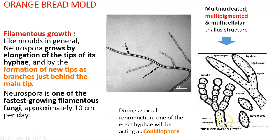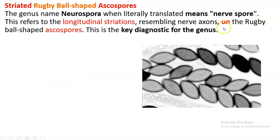During asexual reproduction, there will be an erect hyphae called conidiophore formation. This is the multicellular, multinucleated, and multi-pigmented thallus. You have to know why it is called Neurospora — it literally means 'nerve spore.' Nerve means it is like having longitudinal striations, like nerves in our hand. So similarly, nerve-like striations are seen on the surface of ascospores. That is why it is called Neurospora — nerve-like spore.